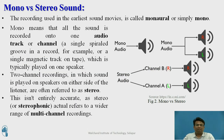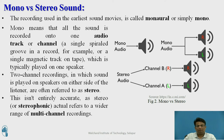What is mono and stereo sound? The recording used in the earliest sound movies is called monaural or simply mono. Mono means all the sound is recorded onto one audio channel, which is typically played on one speaker. As shown in the figure, mono audio is recorded from a single microphone and played onto a single speaker.